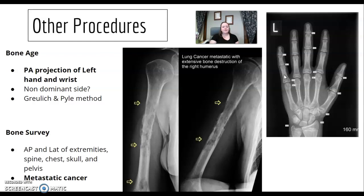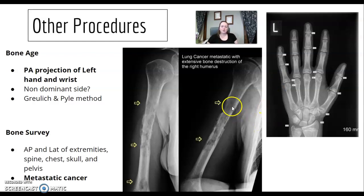Bone surveys: adult bone surveys are most often for metastatic cancer — we're looking for cancer that has traveled into other parts of the body. We do APs and laterals, possibly of extremities, and it includes chest, skull, and pelvis. Know whether metastatic cancer is an additive or destructive disease. Pediatric bone surveys are usually used for abuse surveys, also called NAT — non-accidental trauma.